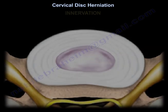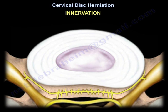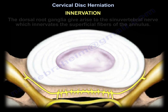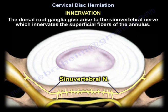How about the innervation? The dorsal root ganglia gives rise to the sino-vertebral nerve, which innervates the superficial fibers of the annulus.